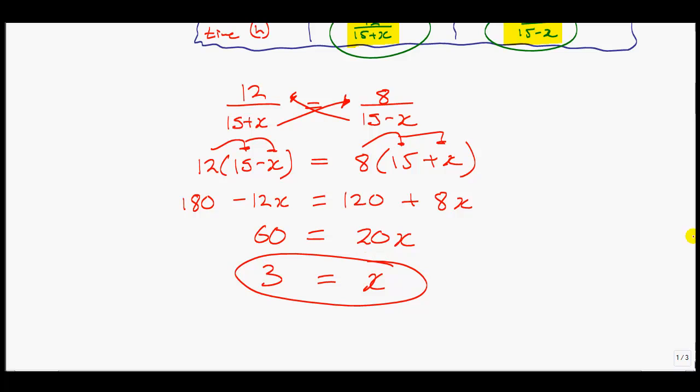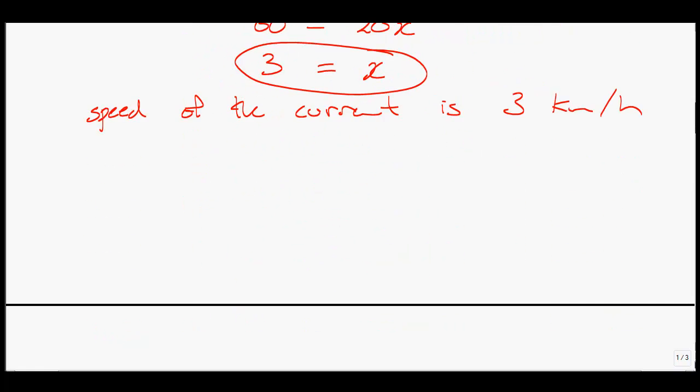If you divide by 20, we see that X is equal to 3. What did X represent? X represented the speed of the current. So the speed of the current is 3 kilometers per hour. That's the first type of question. Let's move on to the next page.